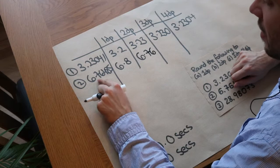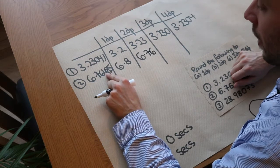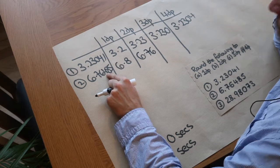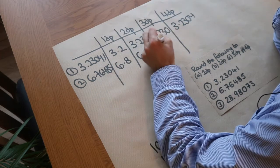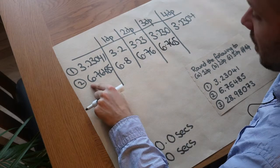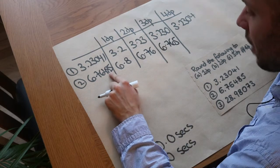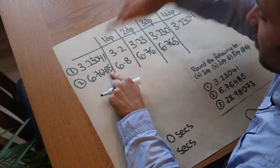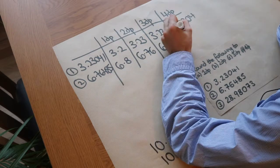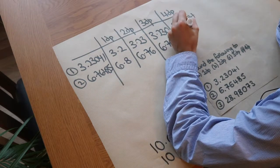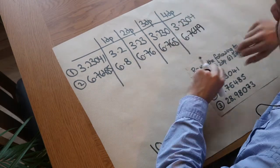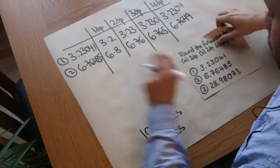For 6.76485 to three decimal places: one, two, three — we check the next digit. Is it greater or equal to five? Yes, so that four goes up to five. We have 6.765. For four decimal places, we keep up to the eight and check the next digit: is it greater or equal to five? Yes, so that eight goes up to nine, giving 6.7649. We discard the five at the end.